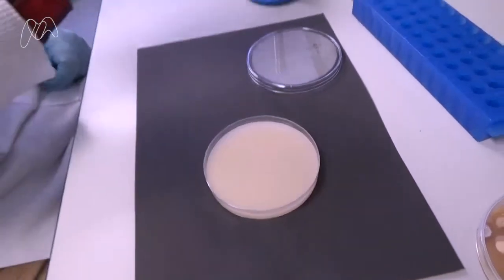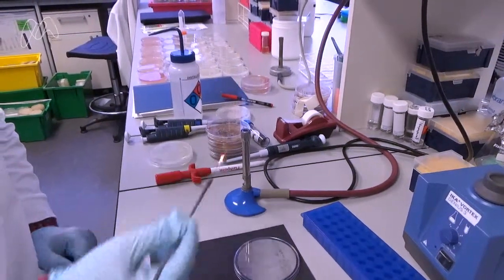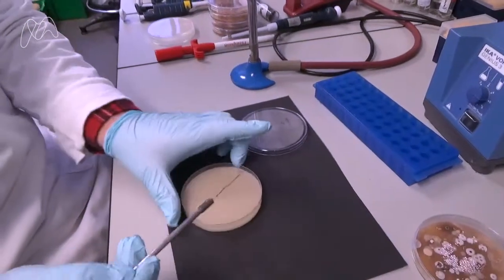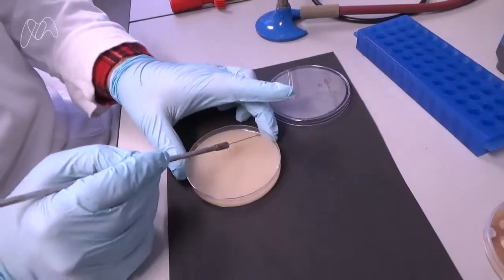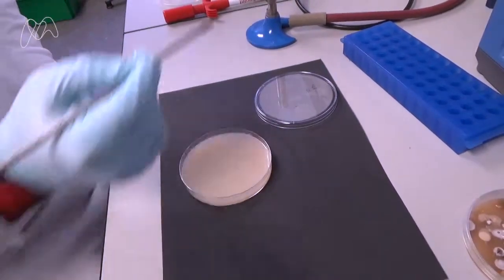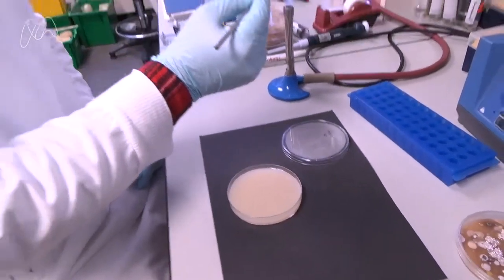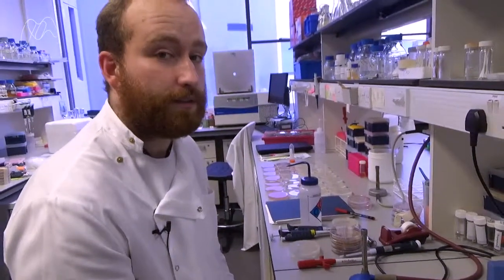Then we have to re-sterilize the loop to remove any excess bacteria. And then we spread it around the plate. The reason we do this is because we're hoping to isolate a single colony of a single strain.